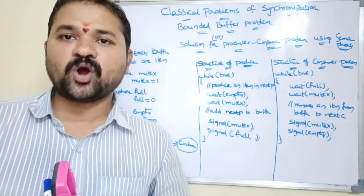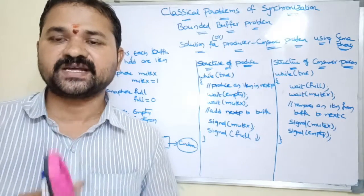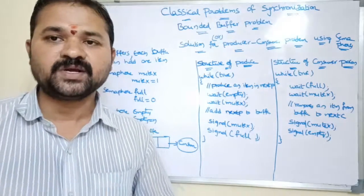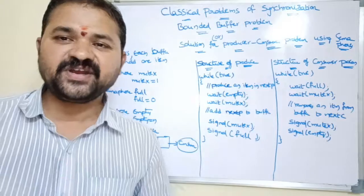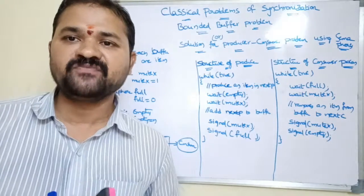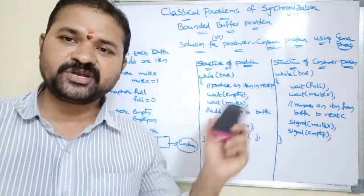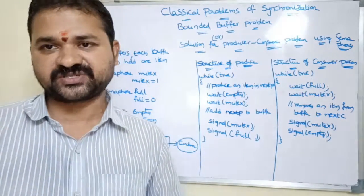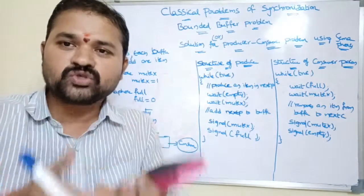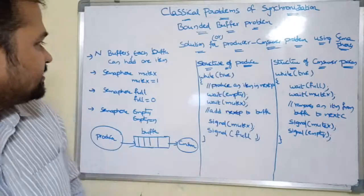Now let's see about classical problems of synchronization. One of the classical problems is the bounded buffer problem, also called the producer-consumer problem, using semaphores. In the first video on process synchronization, we already saw how to solve the producer-consumer problem using a variable called count. In this concept, we will solve it using semaphores. In an examination, if a question is given on the producer-consumer problem, we can solve it using buffers as well as semaphores.